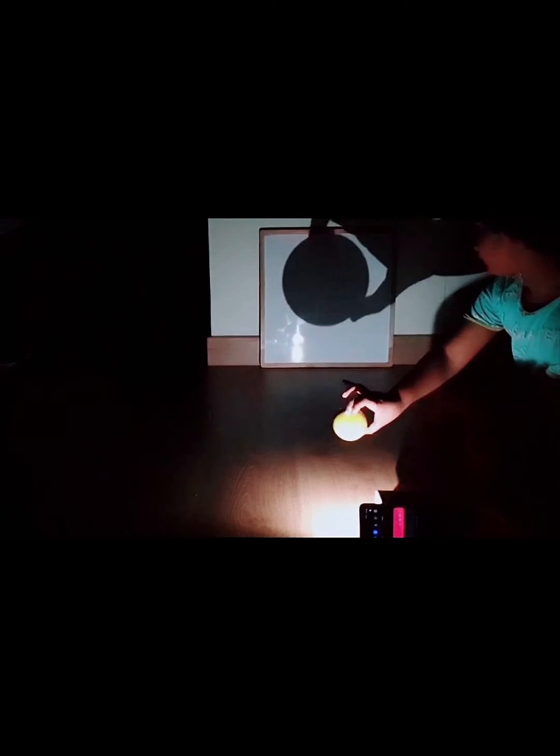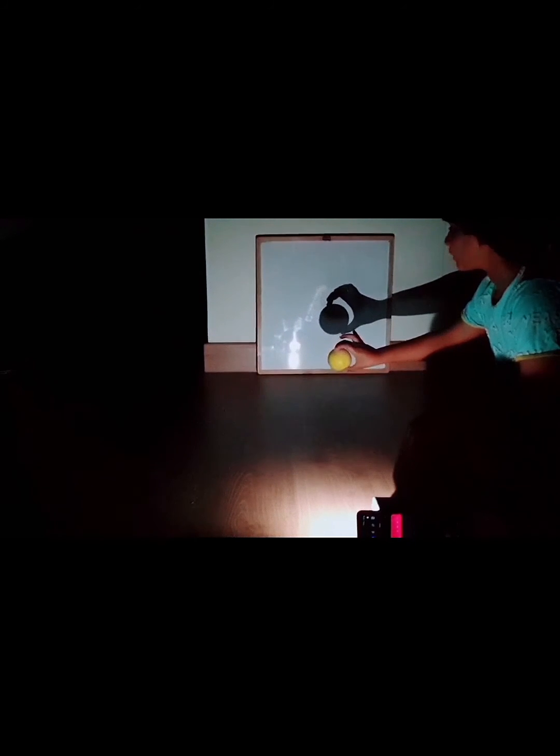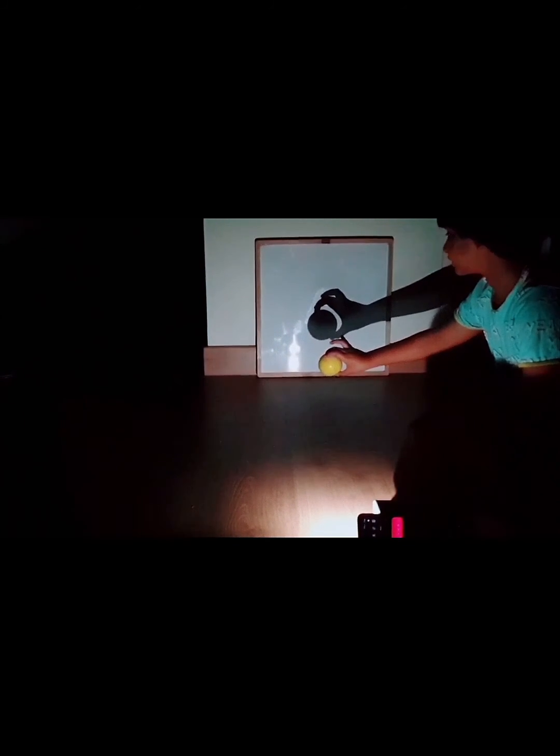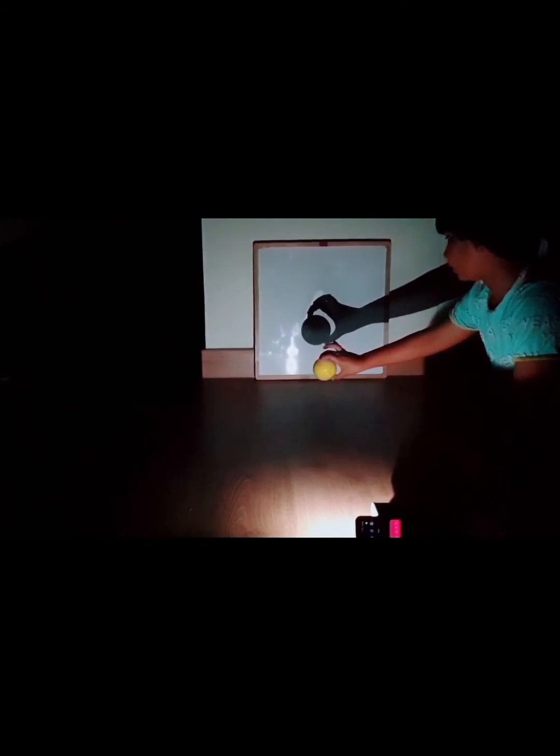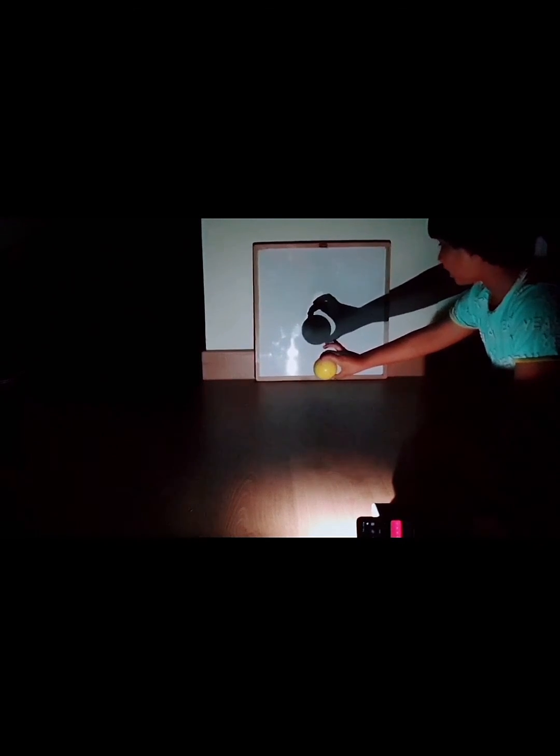Similarly, when an object is far away from the light source, it will block only a small area of the light, decreasing its shadow size.